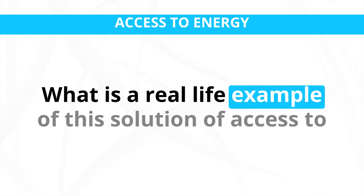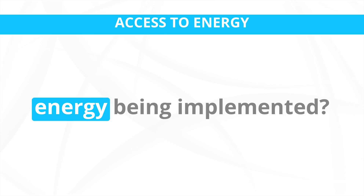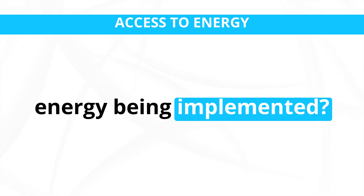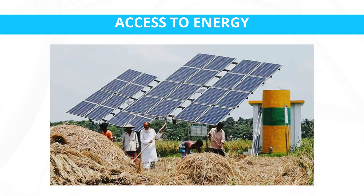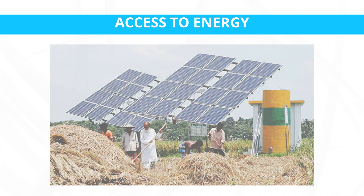A real-life example is the Solar Home System (SHS) program in Bangladesh, which provides solar panels and batteries to off-grid households, enabling access to electricity in rural areas. The program has significantly improved living conditions, education, and economic activities for thousands of impoverished families.